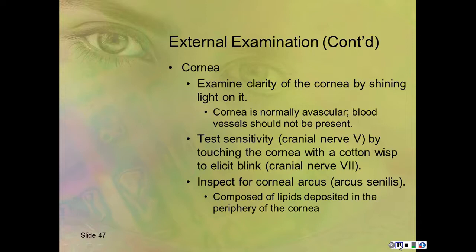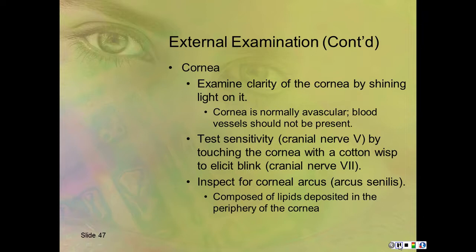For the cornea, ensure clarity by shining a light from the lateral side of the eye toward the nose. The cornea is normally avascular—blood vessels should not be present. Test sensitivity using cranial nerve 5 by touching the cornea with a cotton whisk to elicit the blink reflex. Inspect for corneal arcus, or arcus senilis, composed of lipid deposits in the periphery of the cornea.